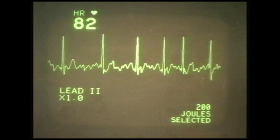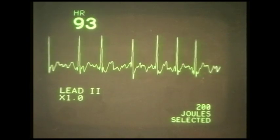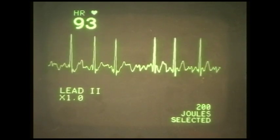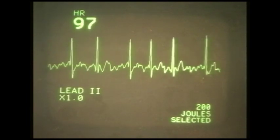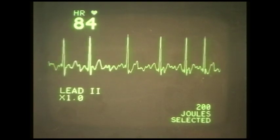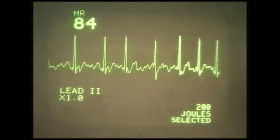And we tend to monitor people on limb lead 2 because it gives us the, it allows us to see P waves on the monitor much better than any of the other leads. And you get positive deflections. And you get positive deflections on the monitor too.